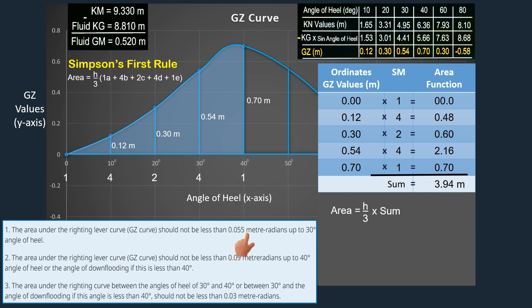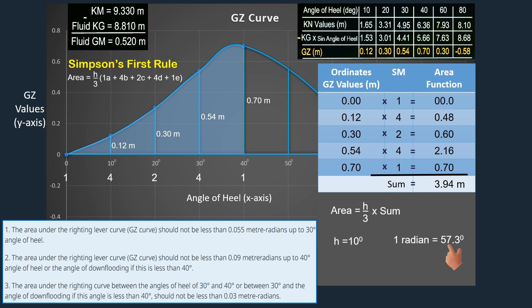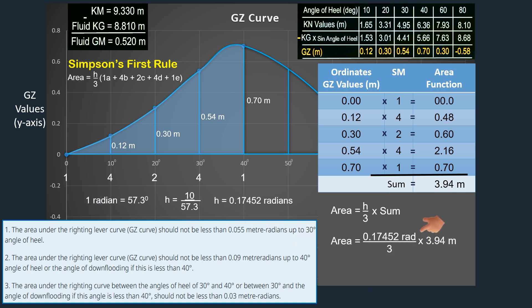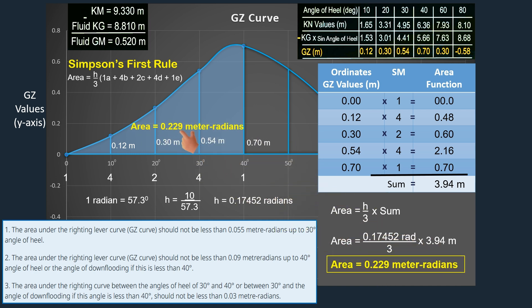The unit in the criteria is given in meter radians, and the GZ values are in meters. However, our common interval is in degrees, so we need to convert it into radians. Since one radian is equivalent to 57.3 degrees, we divide our common interval by 57.3, giving us the value of H as 0.17452 radians. Filling up the formula with the required values, the area under the GZ curve at 40 degrees angle of heel is 0.229 meter radians.